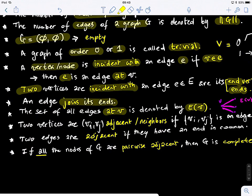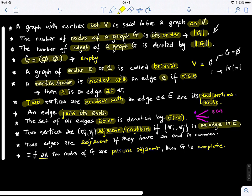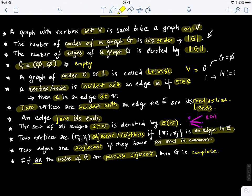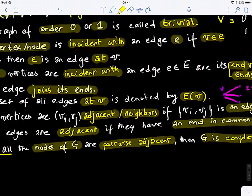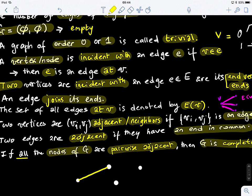The two vertices are adjacent, or neighbors, if VI and VJ have an edge that connects them. The set VI, VJ is an edge. Two edges are adjacent if they share a node, which means they have an end in common. If all nodes of G are pairwise adjacent, it means that G is complete. What does this mean? All your nodes are pairwise adjacent.